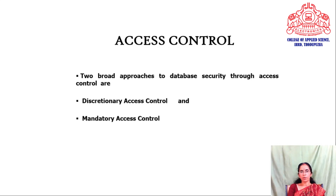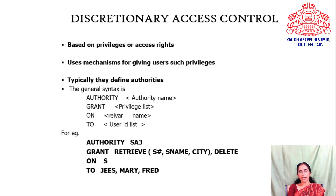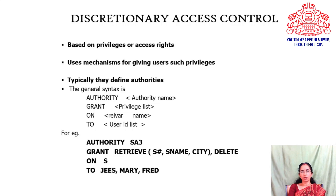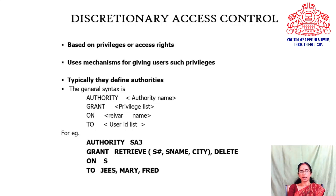There are two broad approaches to database security through access control: discretionary access control and mandatory access control. Discretionary access control deals with certain privileges assigned to database objects — basically the tables or views of the database. The privileges assigned to the database object define what access rights are given to those objects.